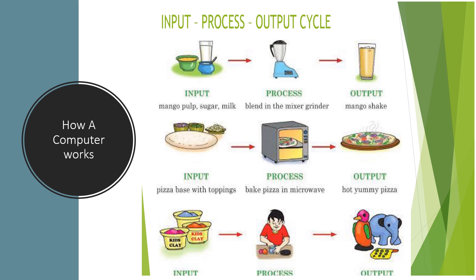Now we will see one example. If we plan to prepare a mango shake, first we will take mango pulp, sugar and milk as input and blend in the mixer grinder. That is the process. And finally, we will get mango shake as output.